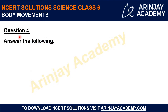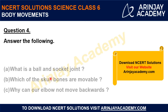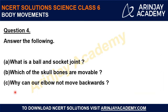Question 4: Answer the following. A: What is a ball and socket joint? B: Which of the skull bones are movable? C: Why can our elbow not move backwards? We will see the answers to these questions in the next slides.